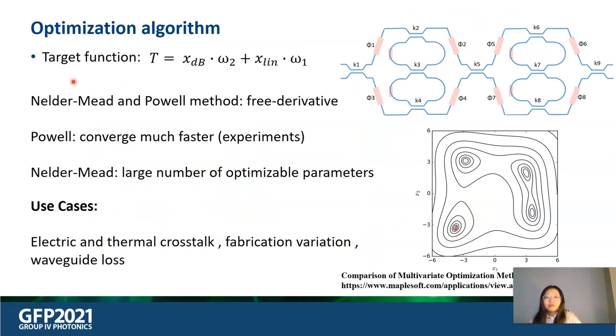The choice of the target function for the optimization is very critical. We try to minimize the following error function. The error between the optimization result and the desired filter response is called x_linear, and the same error on a dB scale is called x_dB. The coefficients omega_1 and omega_2 can be tuned depending on the problem.